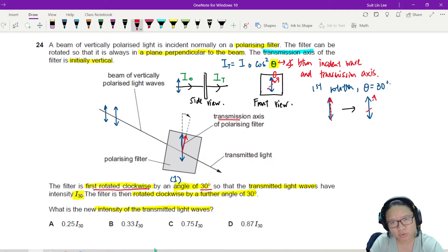So we will rotate by 30 degrees, rotated clockwise by 30 degrees. Then I can use the equation, I is I naught cos square theta. But in this case, they say that the transmitted light is I 30. So I'll put I 30 here is I naught cos square 30 degrees.